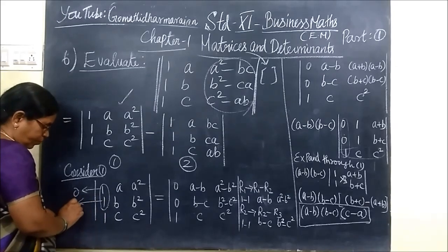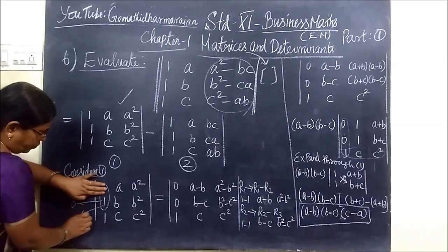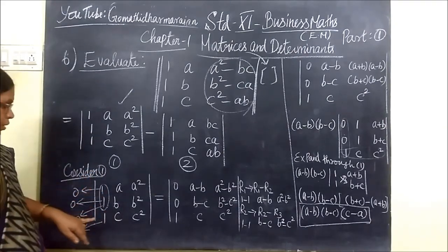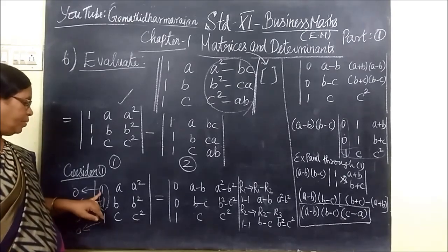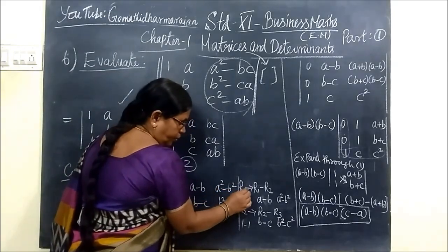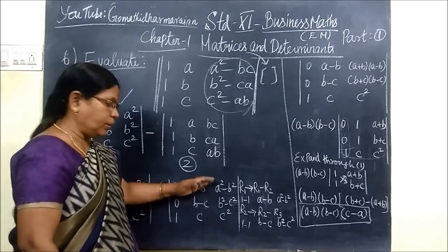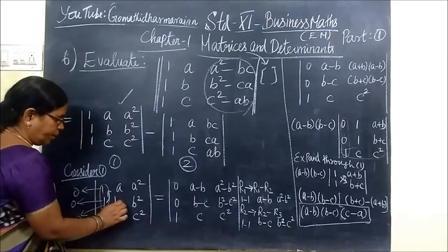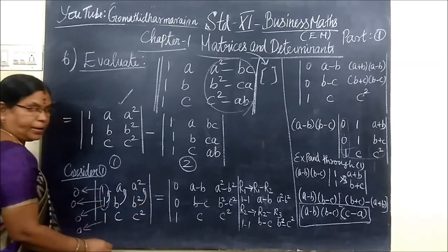To make column 1 elements as 0, we perform row transformations. We transform R1, and in R2 this becomes a minus column. So we are separating: 1 minus 1, then A minus B, then A² minus B².